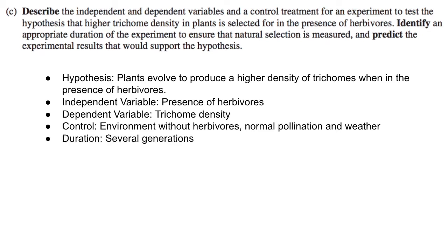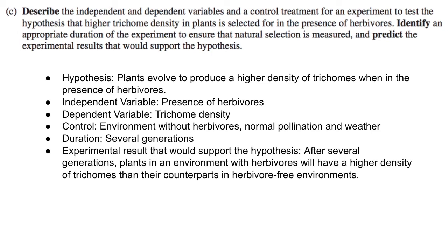The duration has to be several generations because natural selection takes time, and even if it's only one generation long you might not see a very significant change. We want an experiment that lasts several generations so that the plants producing the most trichomes are selected for because their environment contains a lot of predators. The result that would support the hypothesis is that after several generations, the plants in the environment with herbivores will have a higher density of trichomes than counterparts in the control group, because they were subject to the selective pressure of predation.